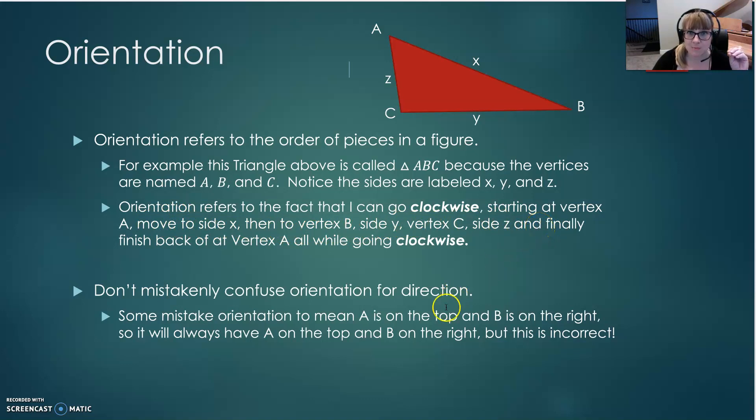Now, some people mistakenly think of orientation as the direction that an object is facing, and that's not the case, so don't be one of those people. I'm going to go over this common mistake and misconception so that you yourself don't make it. Some people who do believe this think that A is always going to be on top, and vertex B is always going to be here on the right. But that's just not the case. That's not what orientation really refers to. It's about the order of the pieces in a figure.